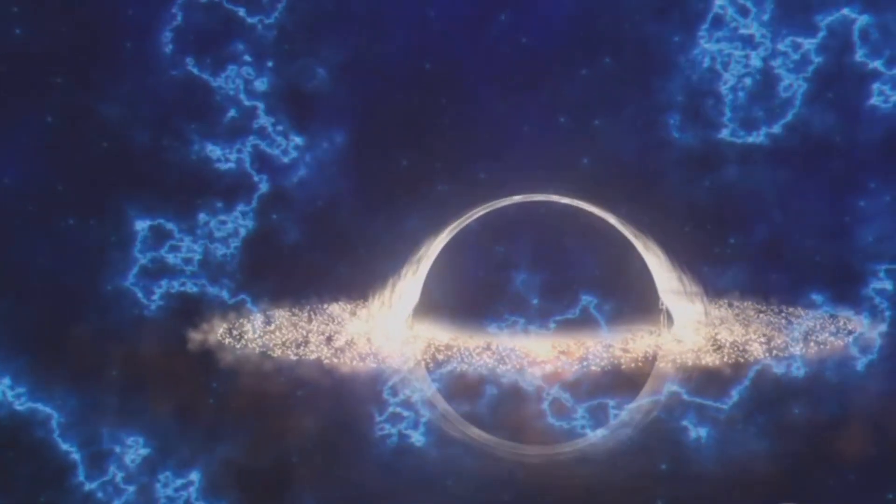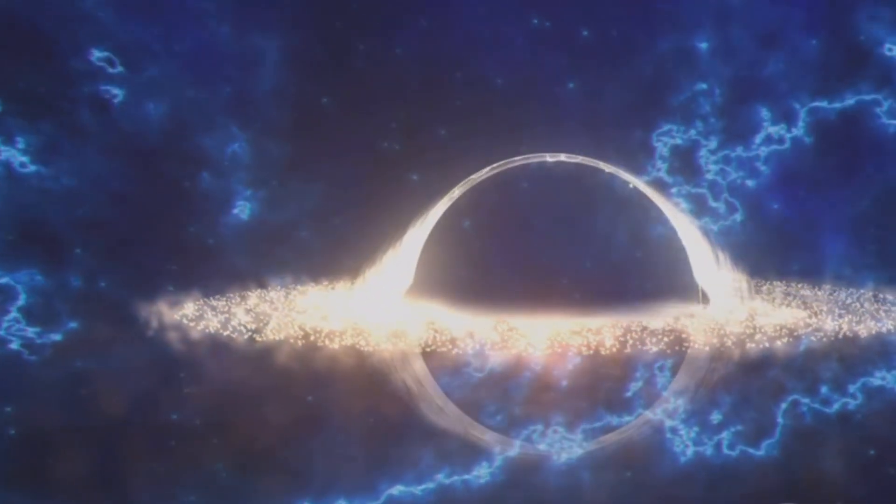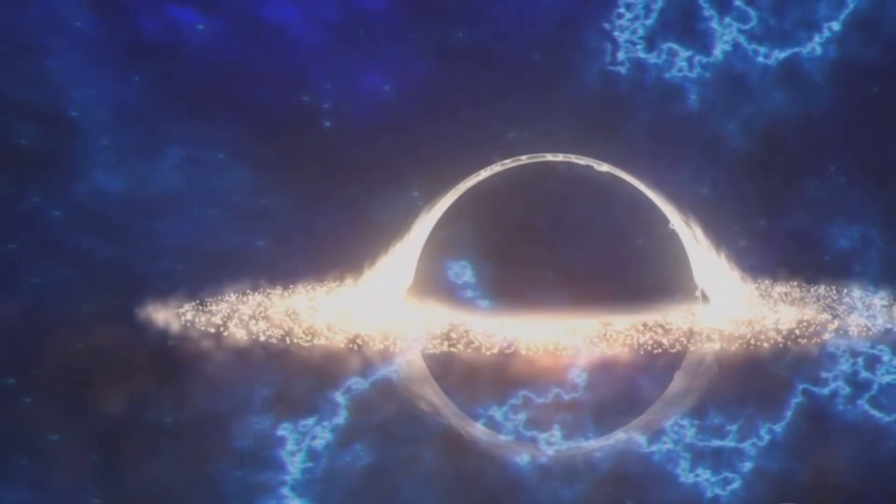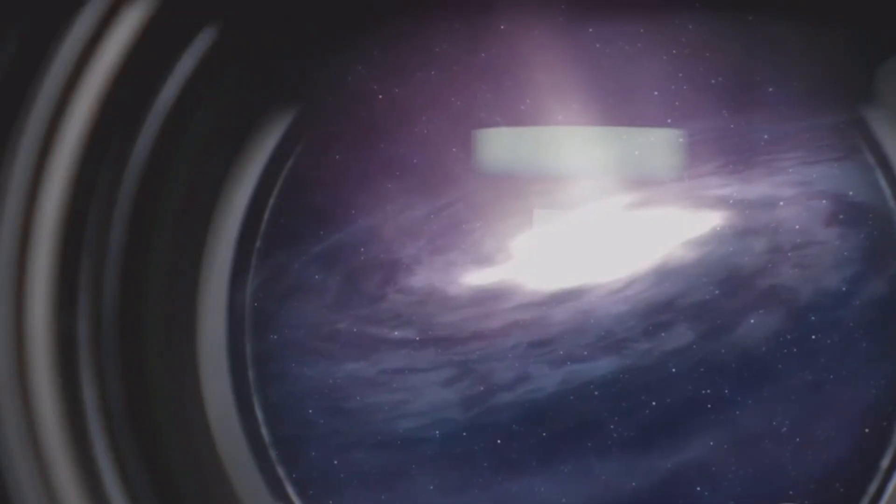By analyzing the motion of stars and gas clouds caught in its gravitational web, we can infer its presence and properties. This indirect observation is our window into the abyss. Phoenix A is no exception. This colossal black hole lies at the centre of its galaxy, influencing everything around it.